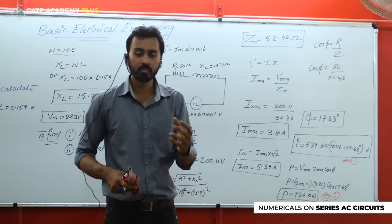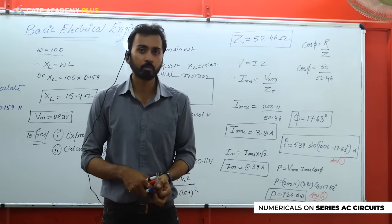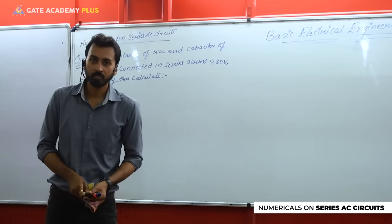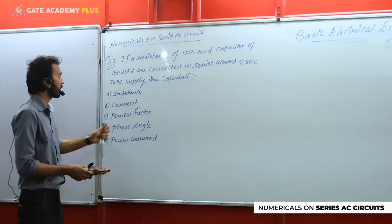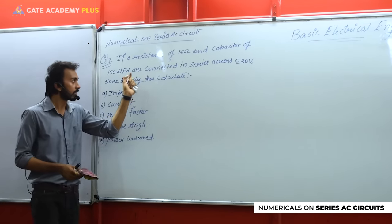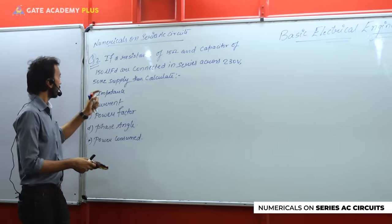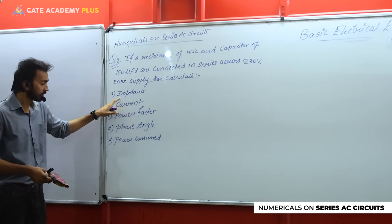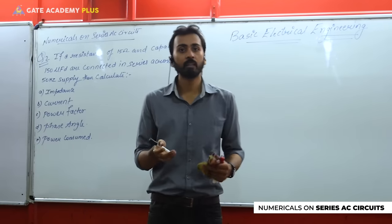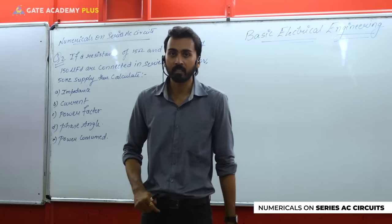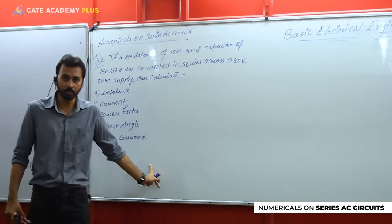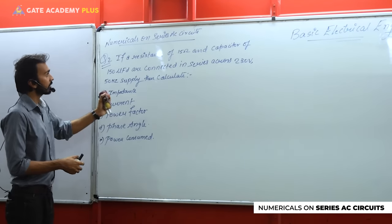For the second question: if a resistance of 15 ohms and a capacitor of 150 microfarads are connected in series across a supply of 230 volts, 50 Hz, then calculate: (1) impedance, (2) current, (3) power factor, (4) phase angle, and (5) power consumed. I have combined all these variations into one question so you can learn all these calculations at once without needing separate questions.